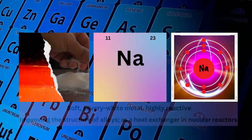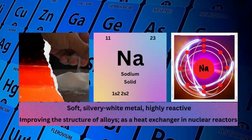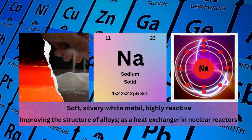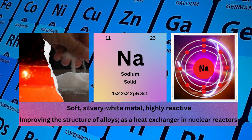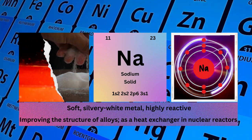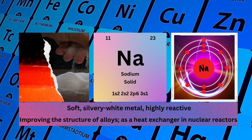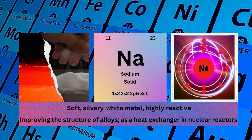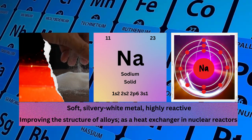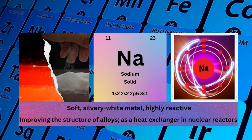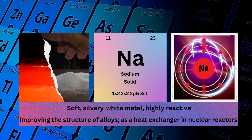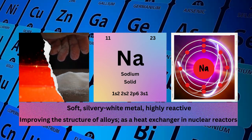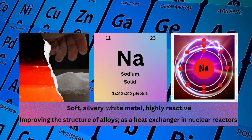Sodium, atomic number 11, mass number 23, symbol Na, state solid, electronic configuration 1s²2s²2p⁶3s¹. Physical properties: soft, silvery-white metal, highly reactive. Sodium used for making alloys and as a heat exchanger in some nuclear reactors.